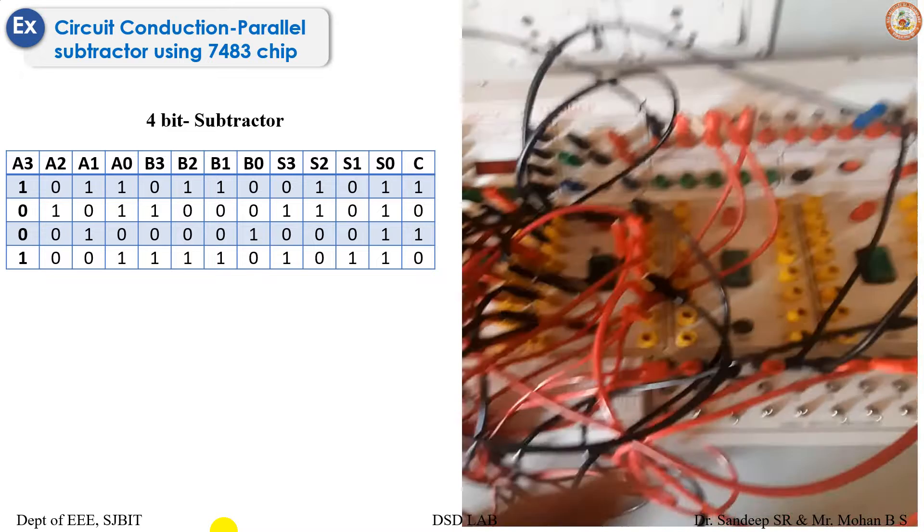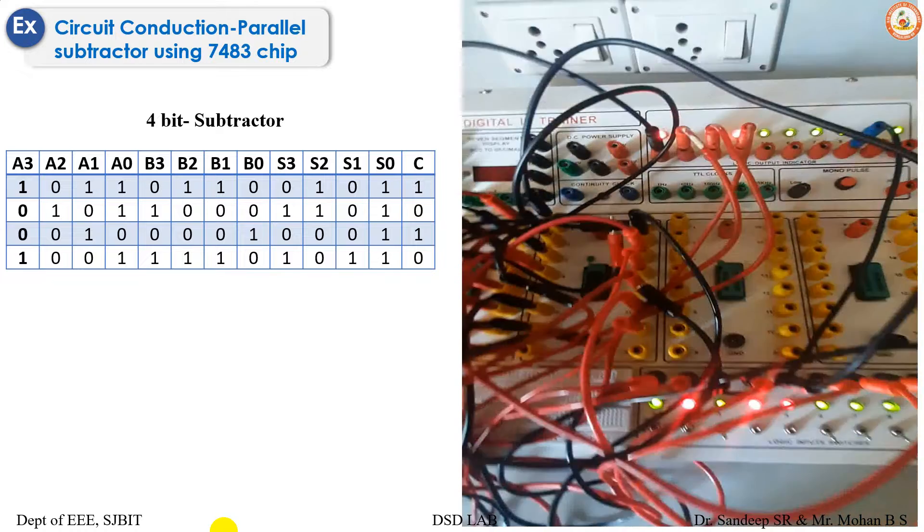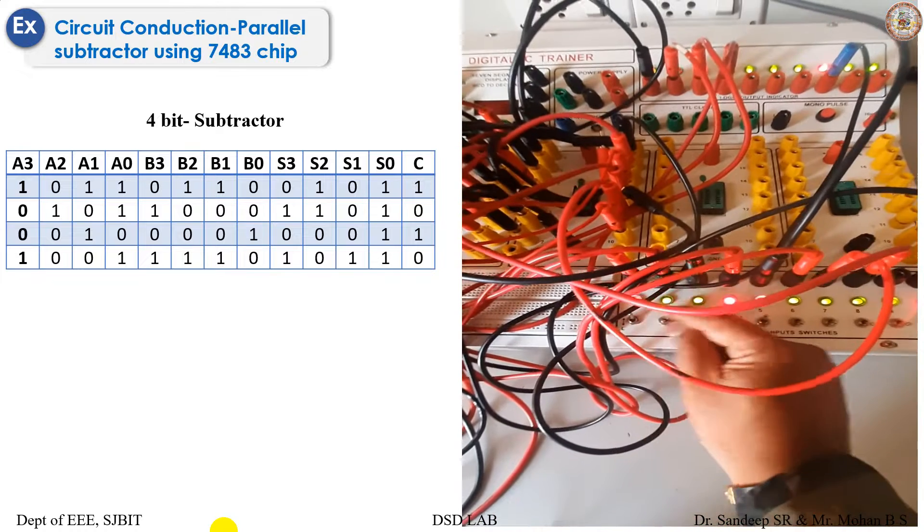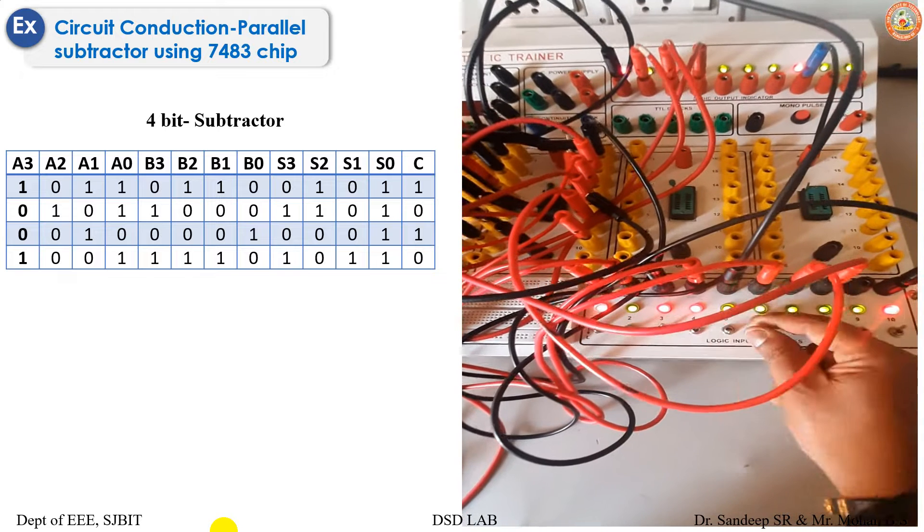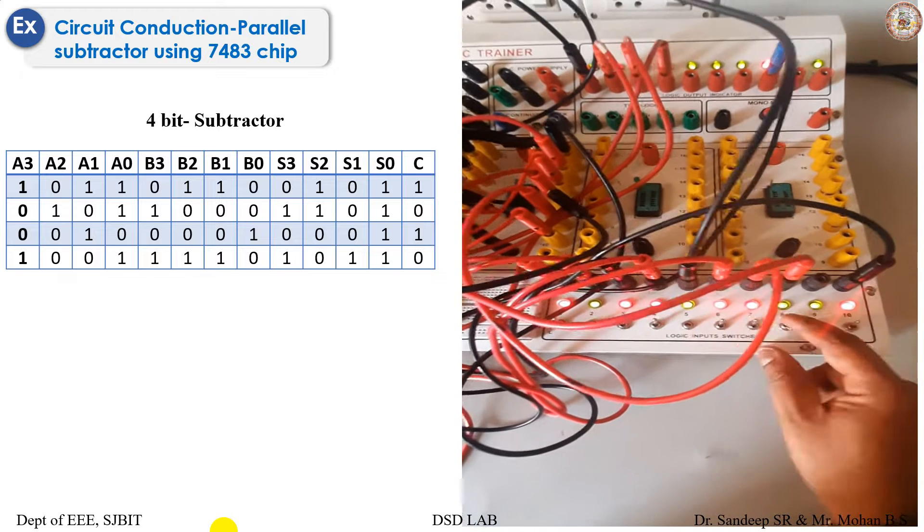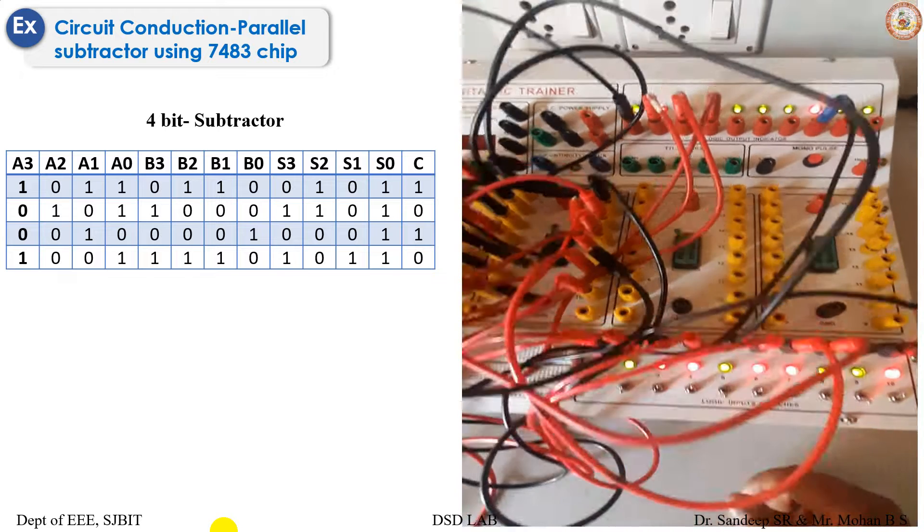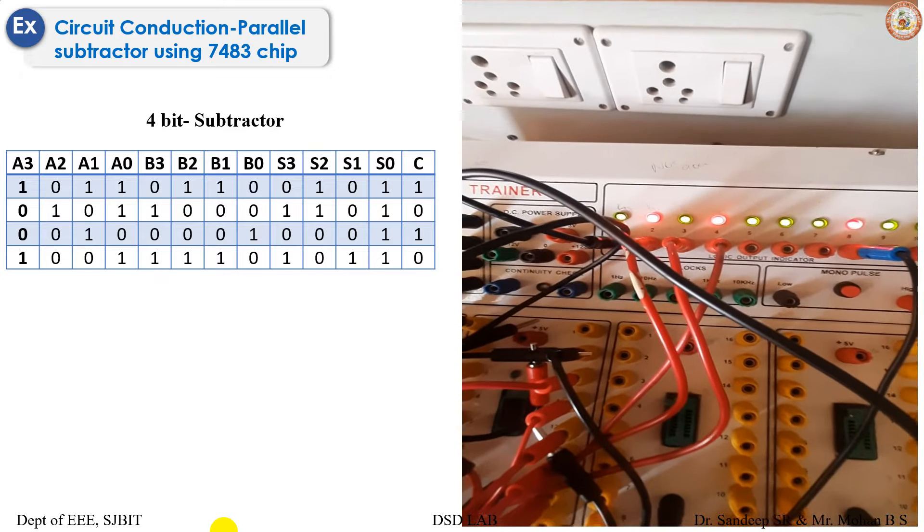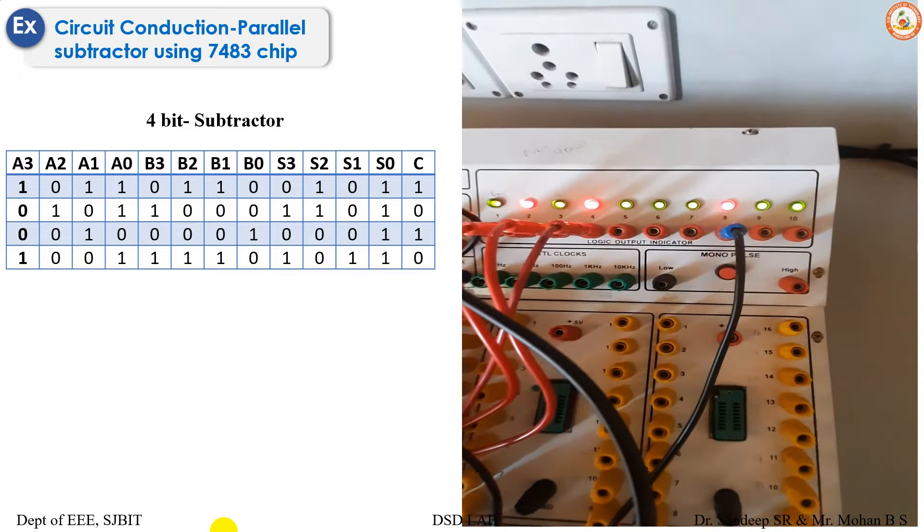Let's see by switching on the trainer kit and give the input data. The first row, the data is being 1, 0, 1, 1, 0, 1, 1, B0 is 0. So the respective output as per the table is 0, 1, 0, 1, and you have carry is also high.